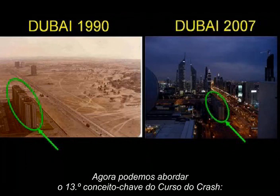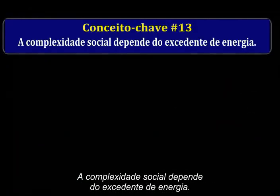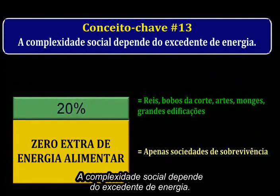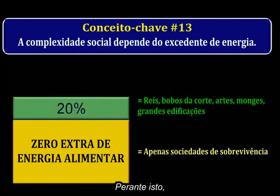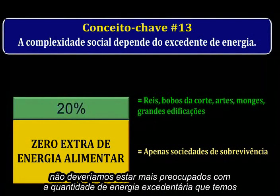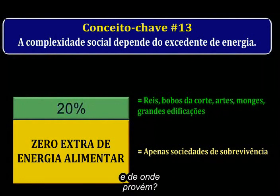Now we can state the 13th key concept of the Crash Course: social complexity relies on surplus energy. Societies that unwillingly lose complexity are notoriously unpleasant places to live. Given this, shouldn't we pay close attention to how much surplus energy we've got, and where it comes from?